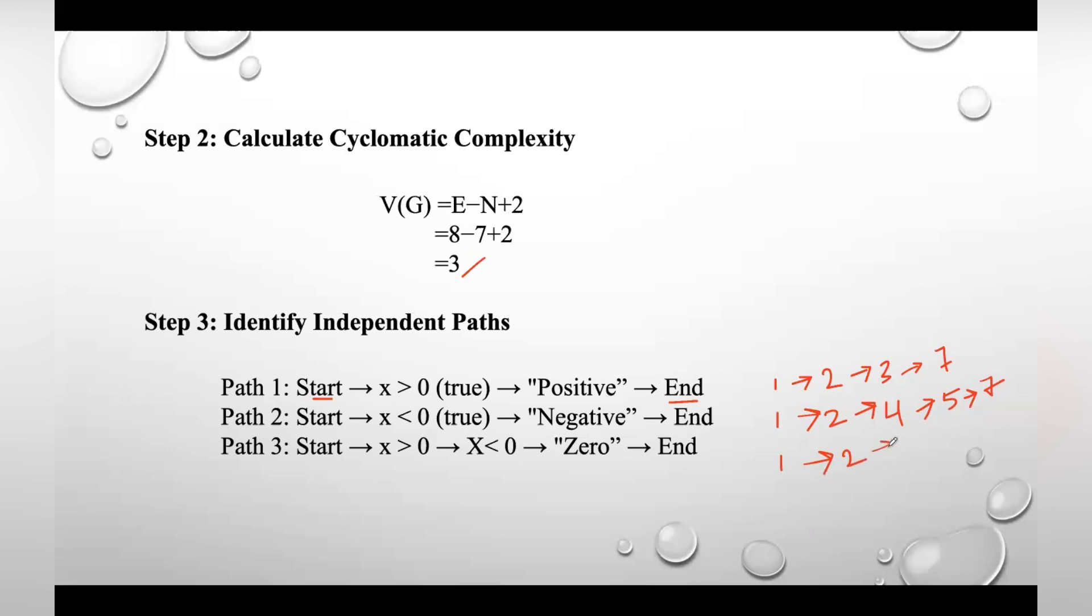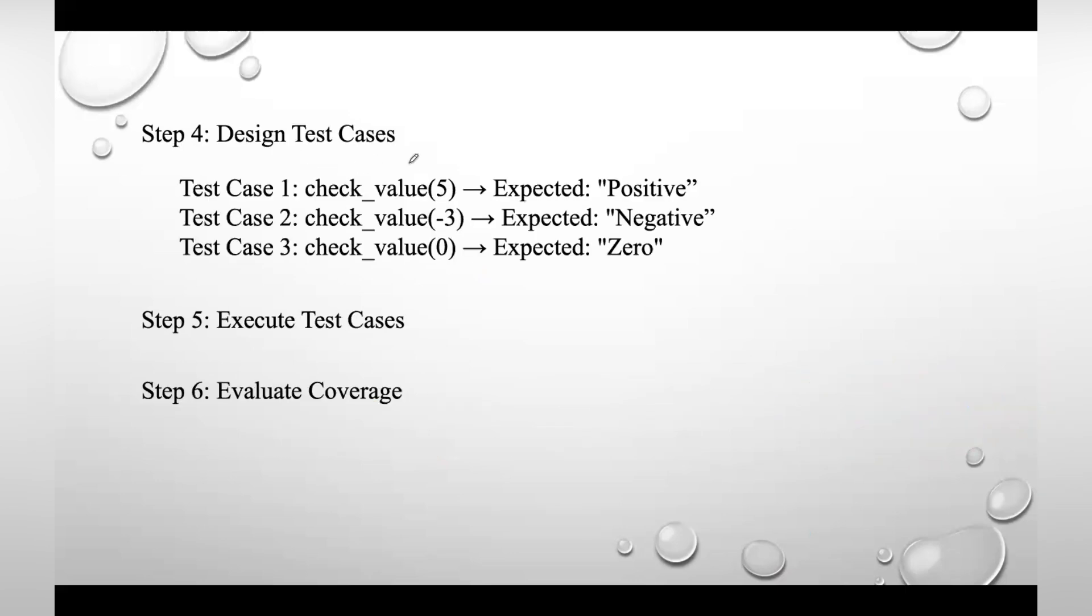1-2-4-6-7. So we got a total of three paths. You can either use this notation or you can use this one also. Now what is step four? We need to design test cases.